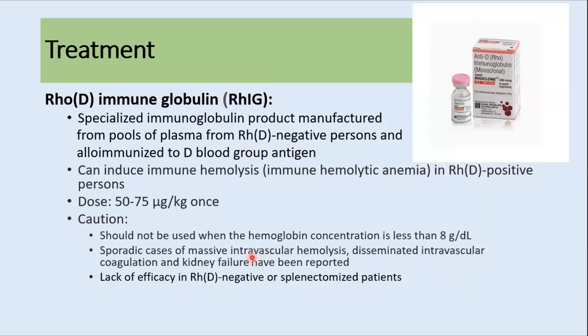RHO immunoglobulin is manufactured from plasma of RhD-negative persons alloimmunized to the D blood group antigen. It induces immune hemolysis in RhD-positive persons. The dose is 50 to 75 micrograms/kg once. It should not be used in patients whose hemoglobin concentration is less than 8 g/dL, as it can cause intravascular hemolysis, disseminated intravascular coagulation, and kidney failure. It is not effective in RhD-negative persons or in those who have undergone splenectomy.